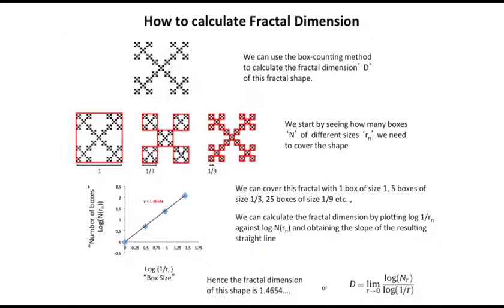Here's one example of what are known as monster curves. In traditional Euclidean geometry, you can never quantitate the area, surface area, or perimeter. However, you can quantitate the fractal dimensionality. What one can do is cover by boxes — we can cover this fractal with one box of size one, five boxes of size one-third, or 25 boxes of size one-ninth, and plot that on a log scale where the ordinate is the number of boxes and the abscissa is the box size. That gives you the dimensionality — for example, the dimension of this structure is 1.4654.